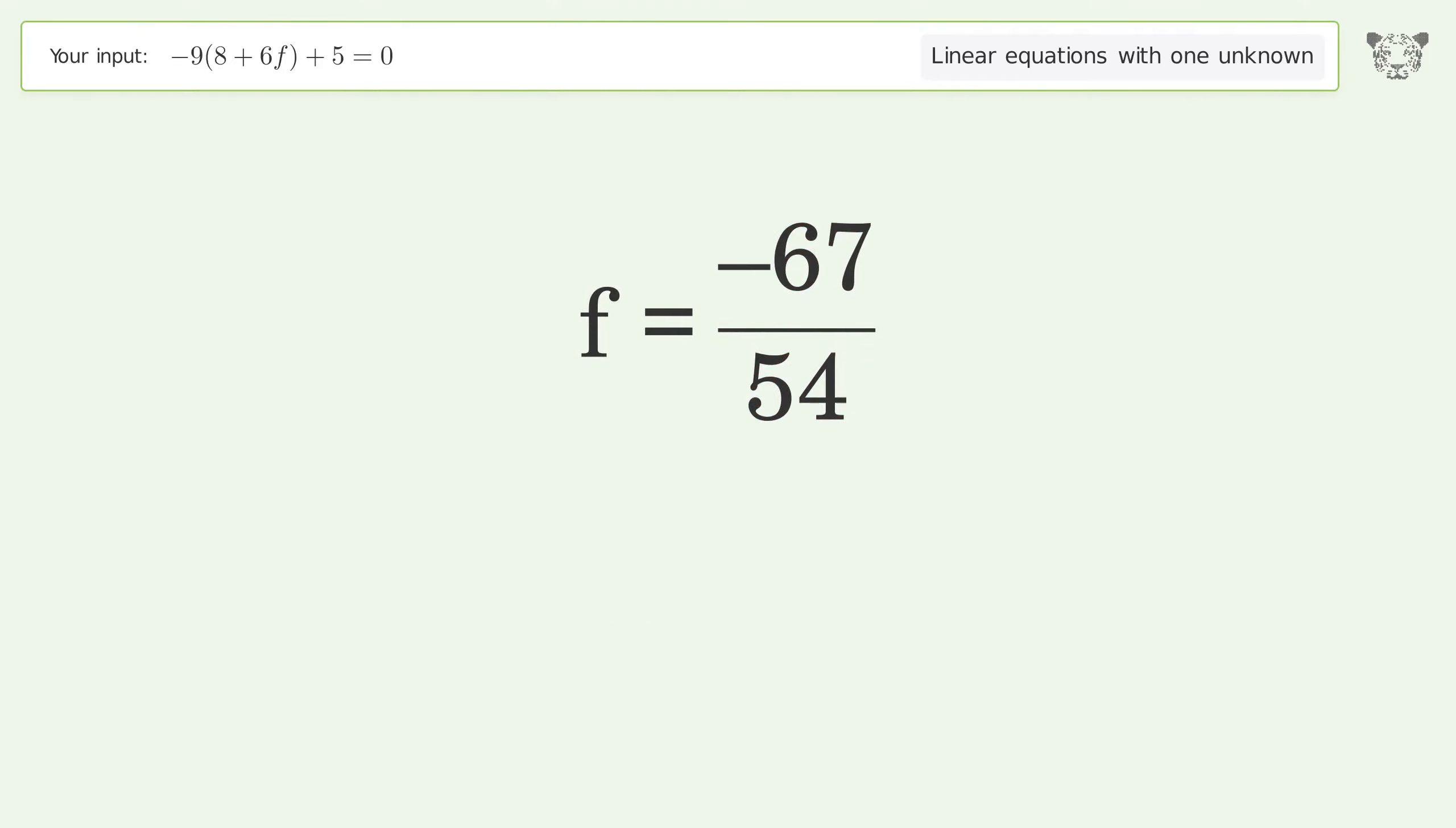And so the final result is f equals negative 67 over 54.